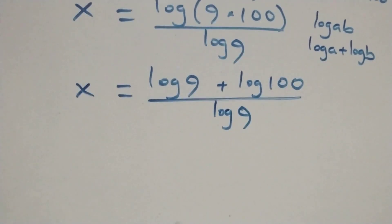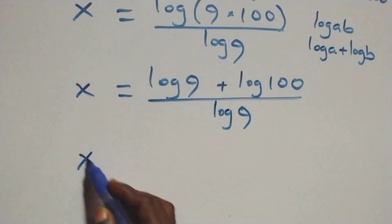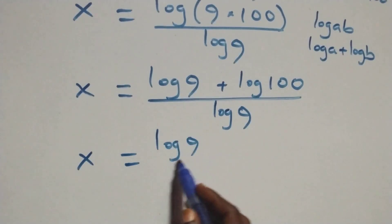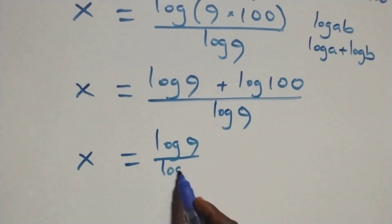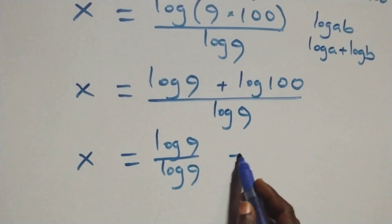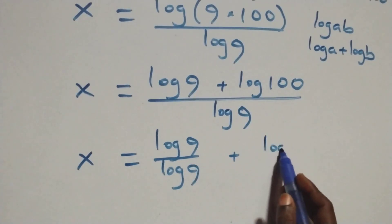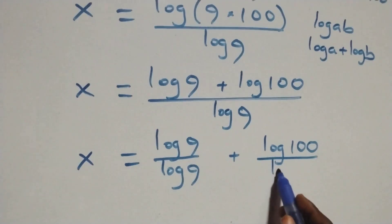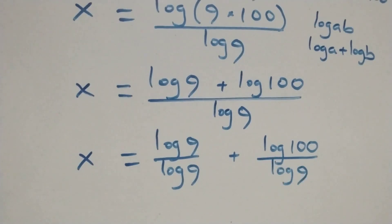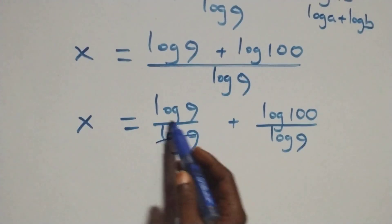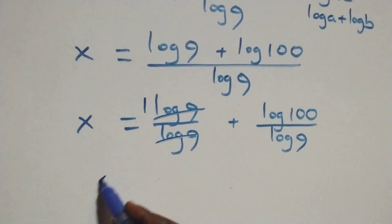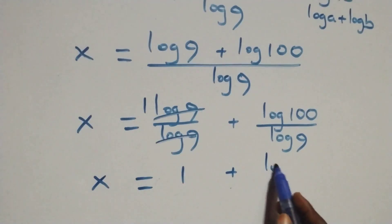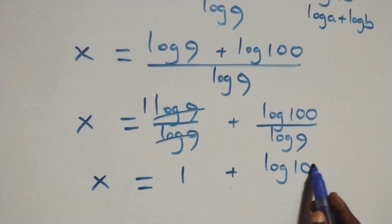Here we separate this into two fractions. We have x equals to (log 9 over log 9) plus (log 100 over log 9). Log 9 cancels each other where one lives, which implies x equals to 1 plus (log 100 over log 9).